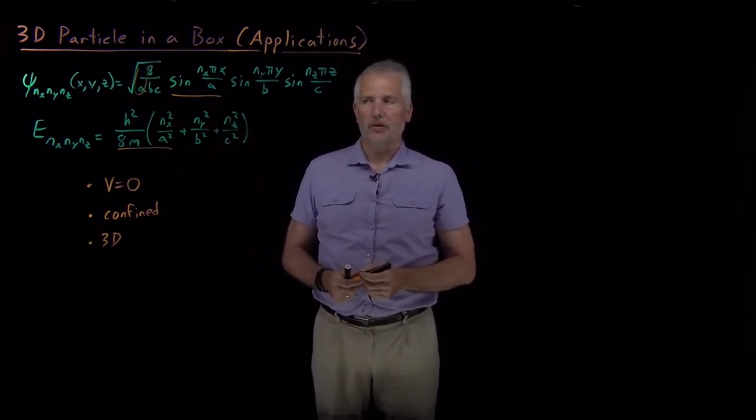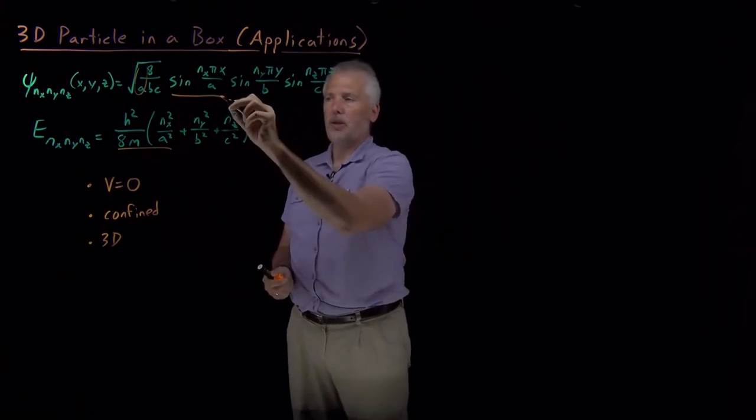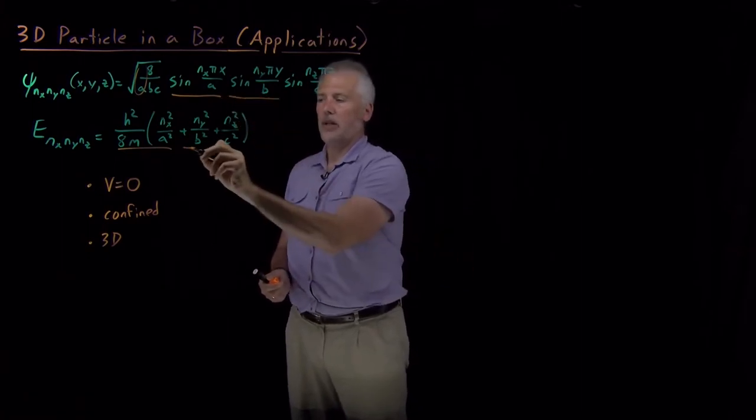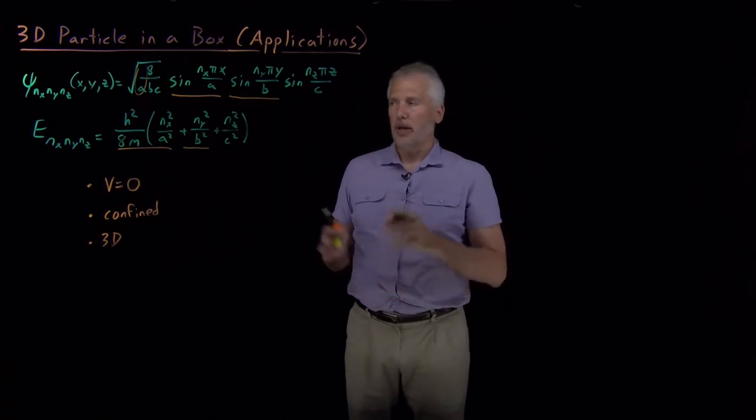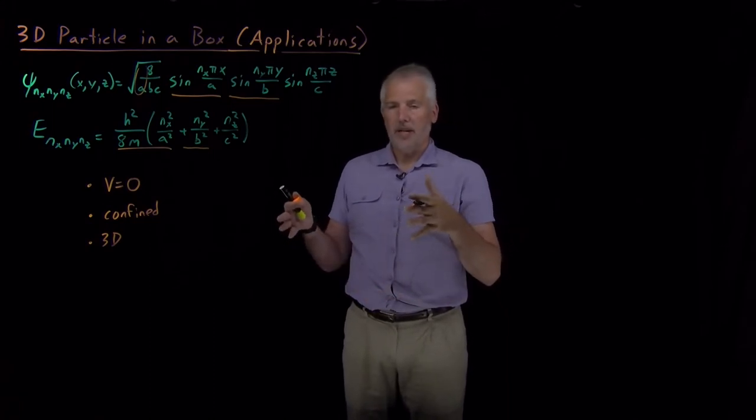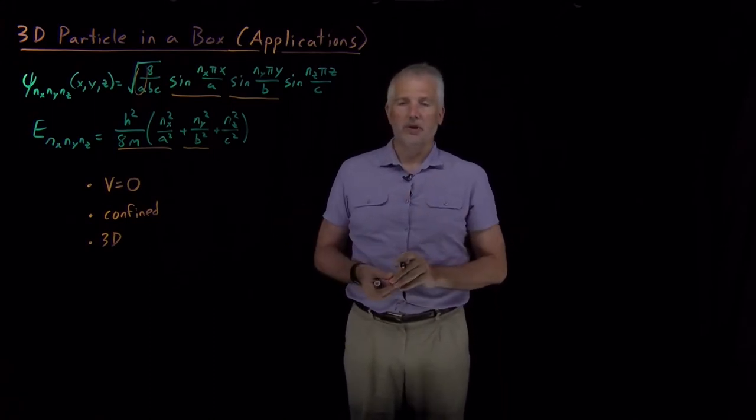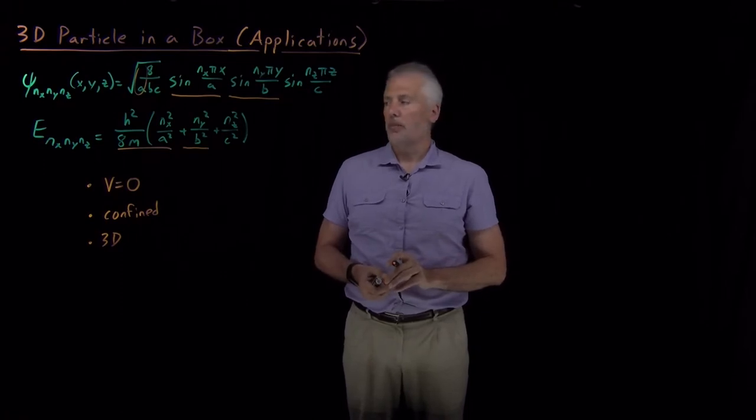Likewise, if we find a particle confined to two dimensions, we can call those x and y and only include the x and y contributions. So 3D particle-in-a-box can be narrowed down to the solutions either for the 2D or the 1D particle-in-a-box as we need.